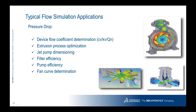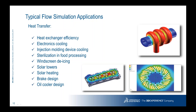Let's see some applications quickly. For fluid flow: extrusion process optimization, jet pump dimensioning, filter efficiency, pump efficiency, fan curve determination. For heat transfer: electronics cooling, heat exchanging, injection molding cooling, solar towers, and solar heating — all related to conjugated heat transfer, which is the transfer of thermal power from a fluid to a solid and vice versa.